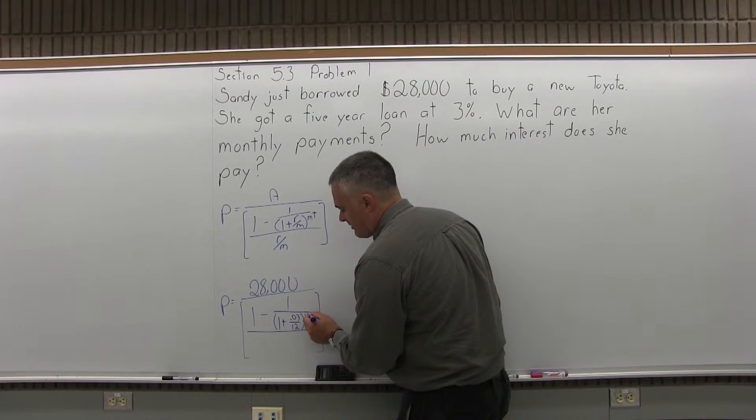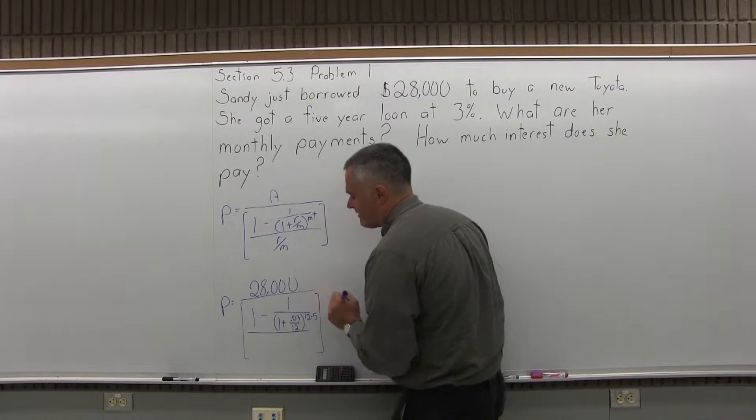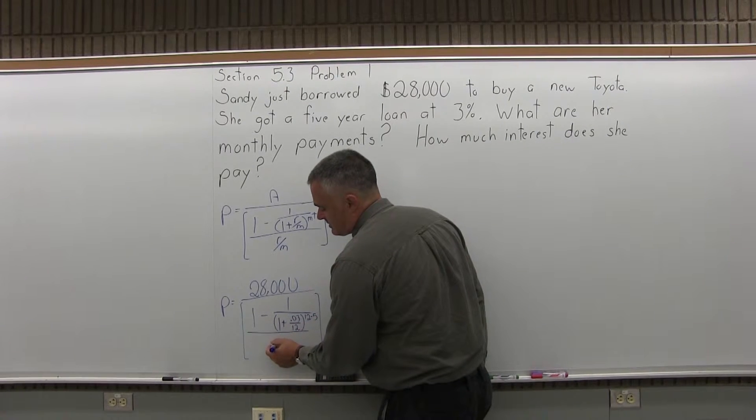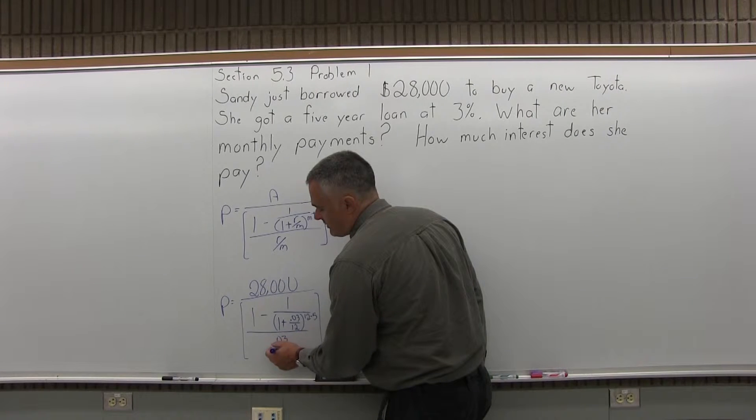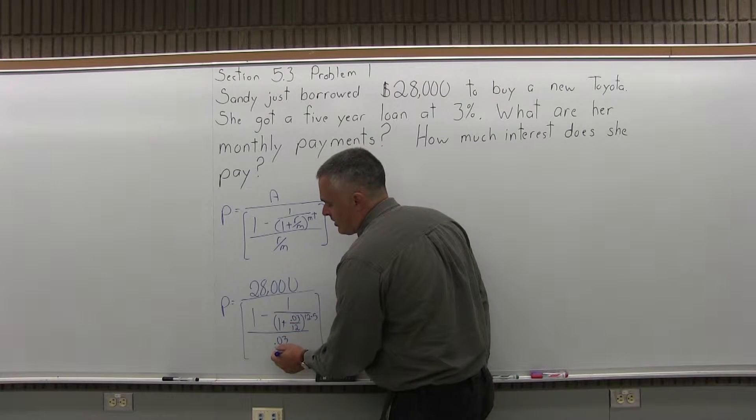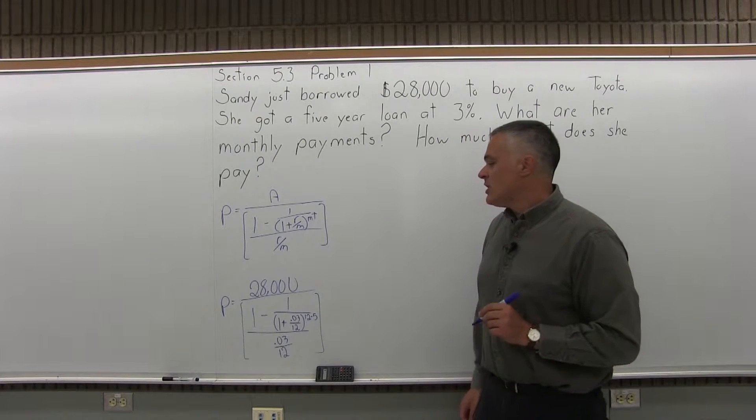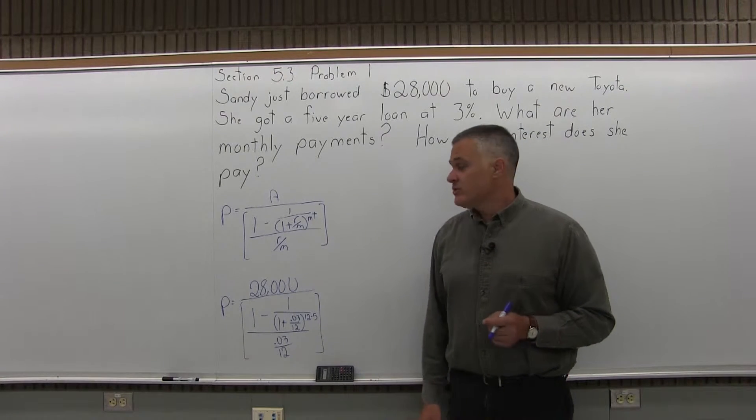So the exponent M times T will be 12 times 5. And then in the denominator of the brackets we have R over M, which is .03 for the R, the rate as a decimal, over M number of payments made per year is 12. So now that the formula is filled in we'll do some of the computation.